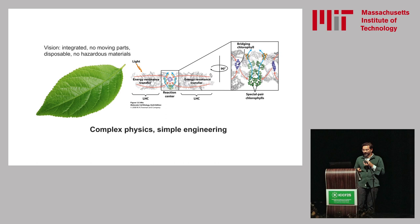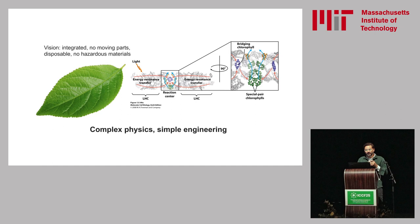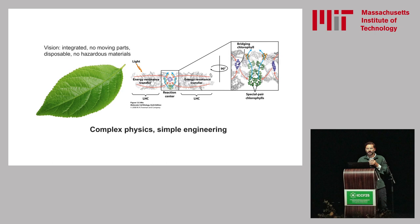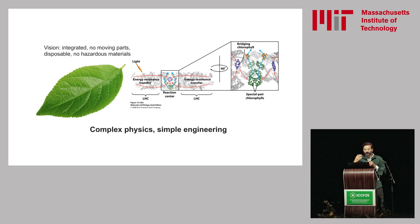Ultimately, these are systems with complex physics but simple engineering, compared to thermonuclear fusion which has simple nuclear physics but very complex engineering. This approach has the potential for integrated disposable systems — almost inspired by nature, like a leaf, which has very complex physics but quite simple engineering and simple materials.